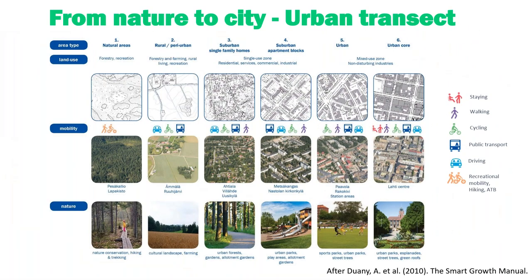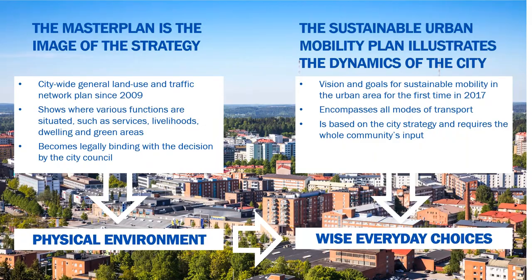We have identified different zones and what you can expect from each area. This is very useful when working on the master plan — looking at different areas, you can see the possibilities and how to proceed. The master plan is the image of the strategy, showing where the functions are: services, livelihoods, green areas, nature parks. It always becomes legally binding with a decision by the city council.